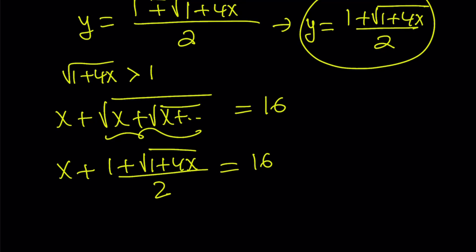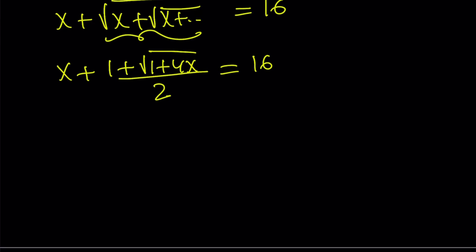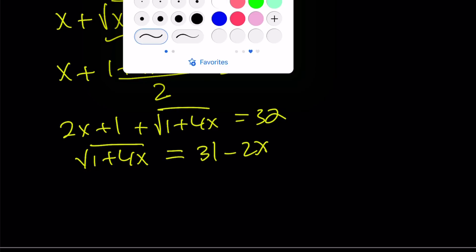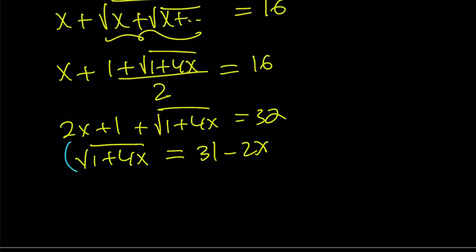From here, we can make a common denominator or multiply both sides by 2. That's going to give us 2x plus 1 plus the square root of 1 plus 4x equals 32. Let's isolate the radical and put everything else on the right-hand side. That's going to give us 31 minus 2x. Now we're going to square both sides.